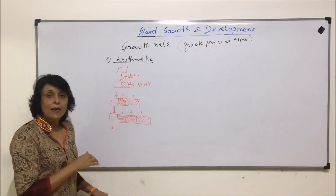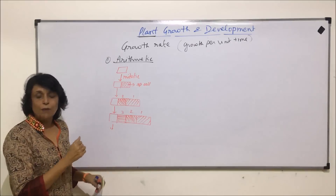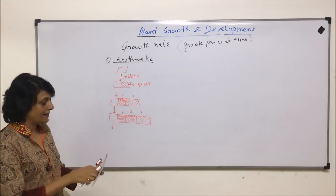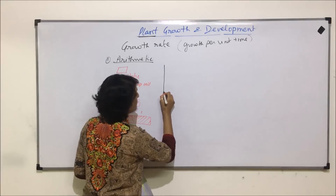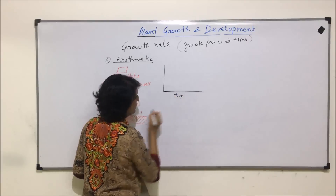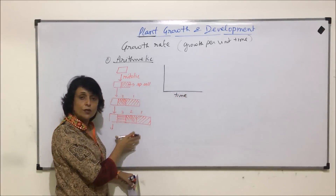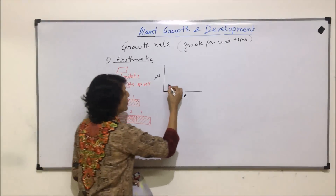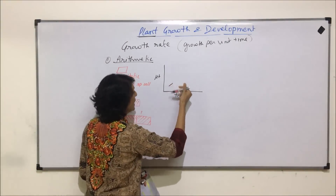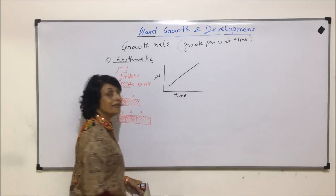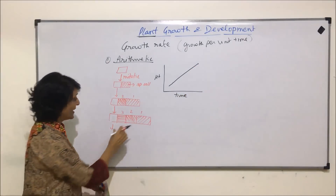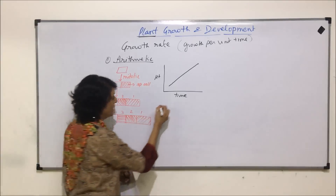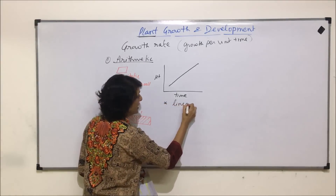We have just taken one cell, but if a hundred cells are multiplying, the same pattern is going to be set. This means there is a gradual increase in size. If a graph is plotted between time and the height of the plant, it increases steadily — doubling, then again and again. So there is going to be a linear graph because the cells are increasing at a very gradual level. The graph is a linear graph.